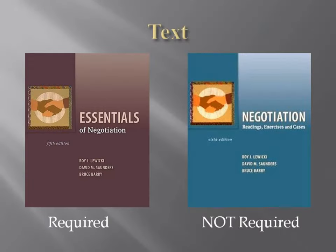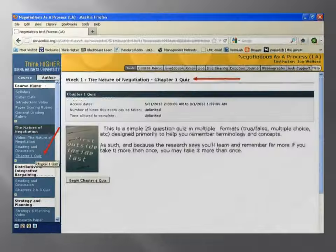The required text is Essentials of Negotiation, the fifth edition. Some colleges at this graduate level require the sixth edition — I did not. Some of you did get it, and that's fine. It's a good book and we'll do some of the exercises and cases in class that are in the 6th edition, but it's not required for you to buy.